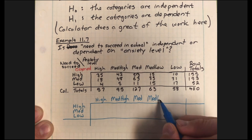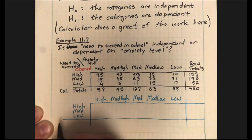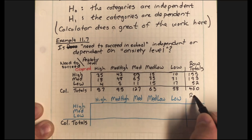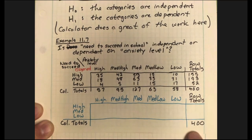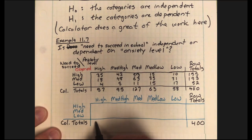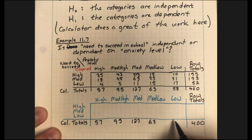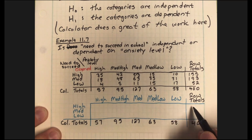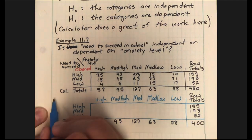Let's make the same table side by side so you can see both and judge the differences. There'll be a good payoff: I'll show you how to totally automate this on your calculator so you don't have to always write it out. I go through my categories high, medium high, medium, medium low, and low. I would still have column totals and row totals adding up to 400. Among those: 57 said high anxiety, 95 said medium high, 127 medium, 63 medium low, 58 low. And 155 said high need to succeed, 193 medium need, 52 low need.